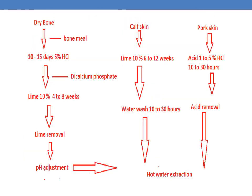Coming to the overall manufacturing procedure of gelatin. Both bone and skin gelatins are available. Whenever dry bone or bone meal is used, it is first subjected to acid treatment — 5% HCl for 10 to 15 days. Then it is subjected to base treatment with 10% lime for 4 to 8 weeks. Then it proceeds to lime removal, pH adjustment, and hot water extraction.